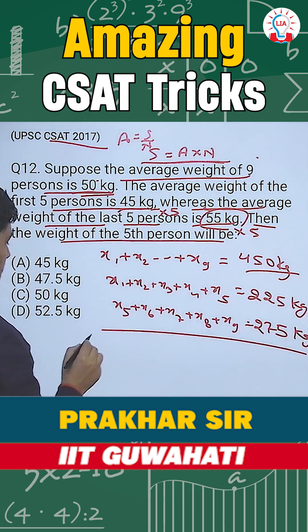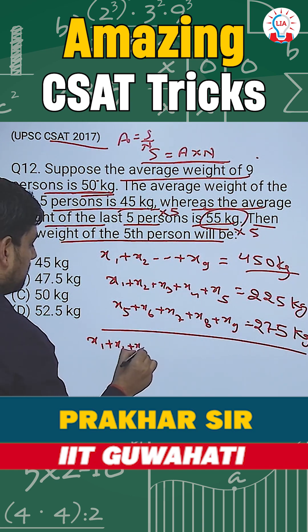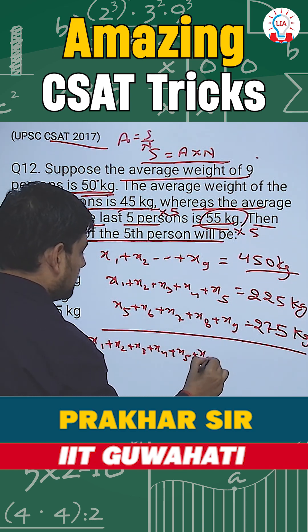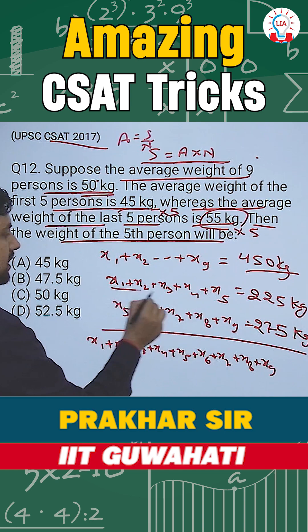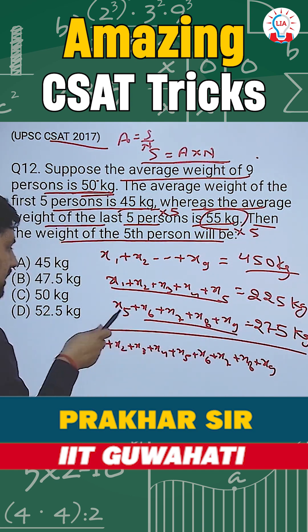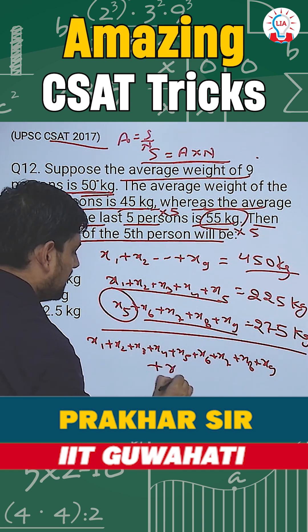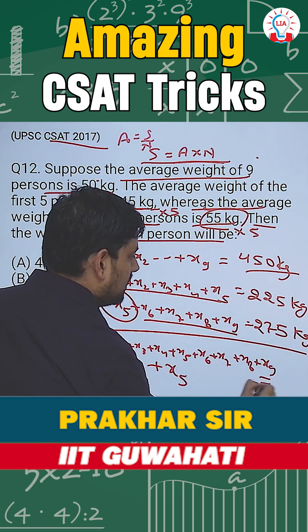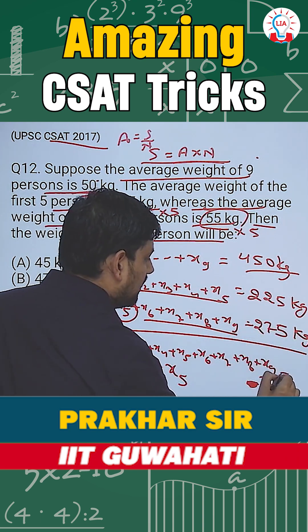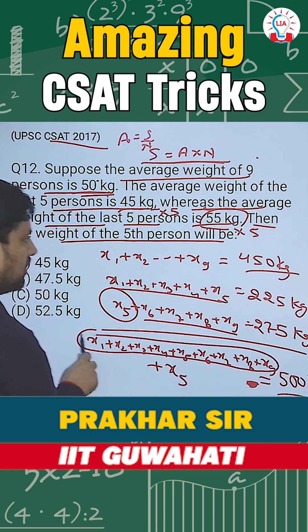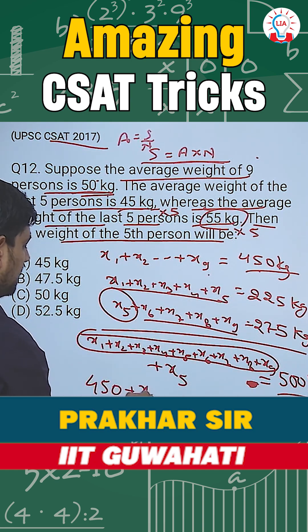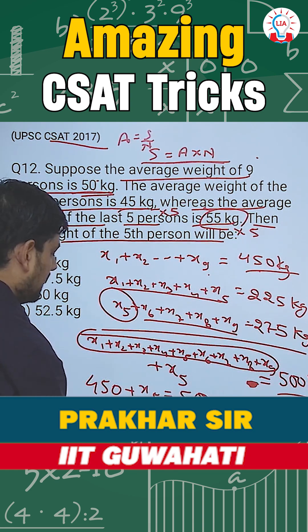Now, if I add both equations, I get x1 through x9, but x5 appears in both groups, so I get one extra x5. This sum comes out to be 225 plus 275, which is 500 kg. Since x1 to x9 equals 450, this becomes 450 plus x5 equals 500, so x5 equals 500 minus 450, that is 50 kg.